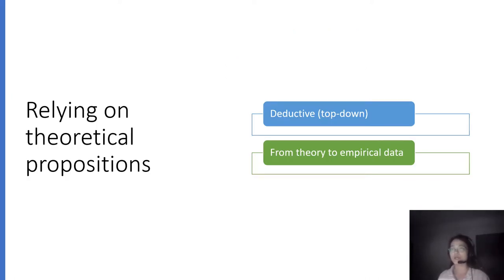First, it is very much a deductive approach, which means you follow some theoretical propositions that you hold, no matter if it's from your daily observation, your previous experience or the existing literature. You anyway have a list of theoretical propositions at hand. And following these propositions, you are going to look for empirical data to match these theoretical propositions. So this is typical from theory to empirical data approach.